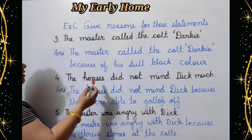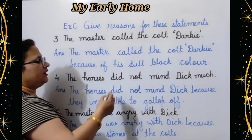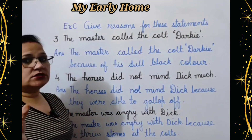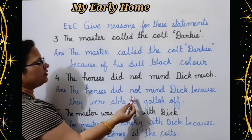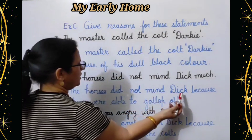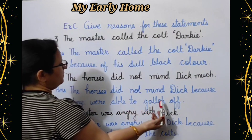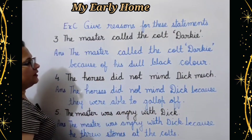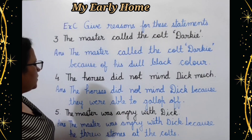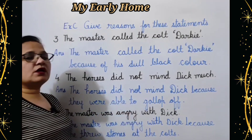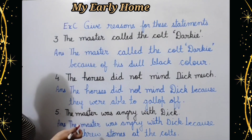Fourth statement: The horses did not mind Dick much. Ghode ko Dick ki baat ka zyada bura nahi lagta tha. Answer: The horses did not mind Dick because they were able to gallop off — kyunki uski wajahe se wo gallop yani tez daud paate the.